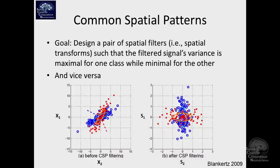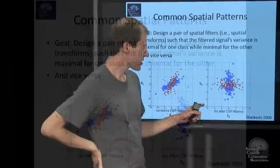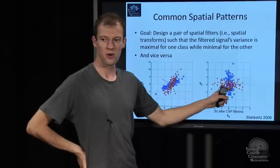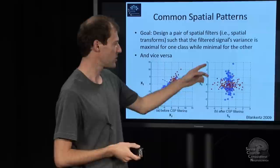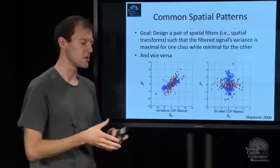And second, if I look at one channel and I look at the variance, in one case, the variance is very large, and in the other case, the variance is very small. So it's maximally informative with respect to variance. And if I look at the other channel, actually, it's the other way around.